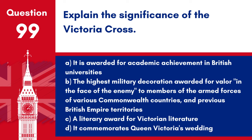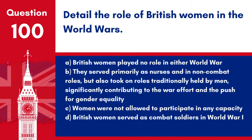Question 99: Explain the significance of the Victoria Cross. a. It is awarded for academic achievement in British universities. b. The highest military decoration awarded for valour in the face of the enemy to members of the armed forces of various Commonwealth countries and previous British Empire territories. c. A literary award for Victorian literature. d. It commemorates Queen Victoria's wedding. Answer: b. The Victoria Cross represents the utmost honour for bravery in military service.